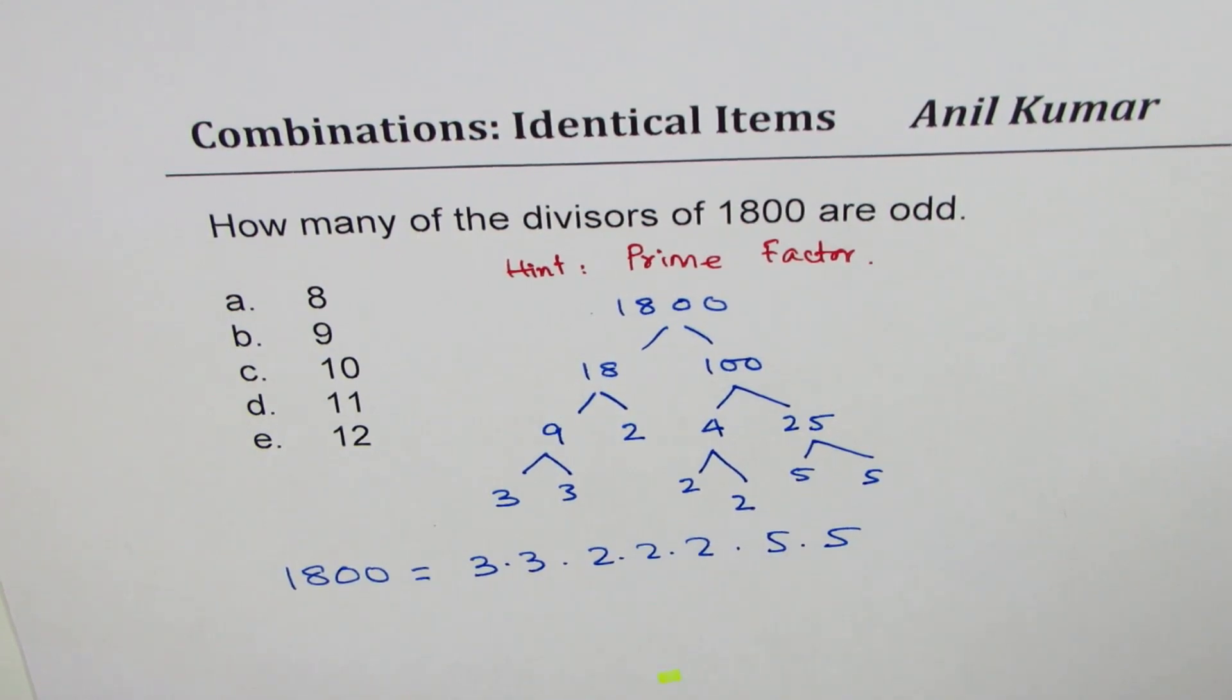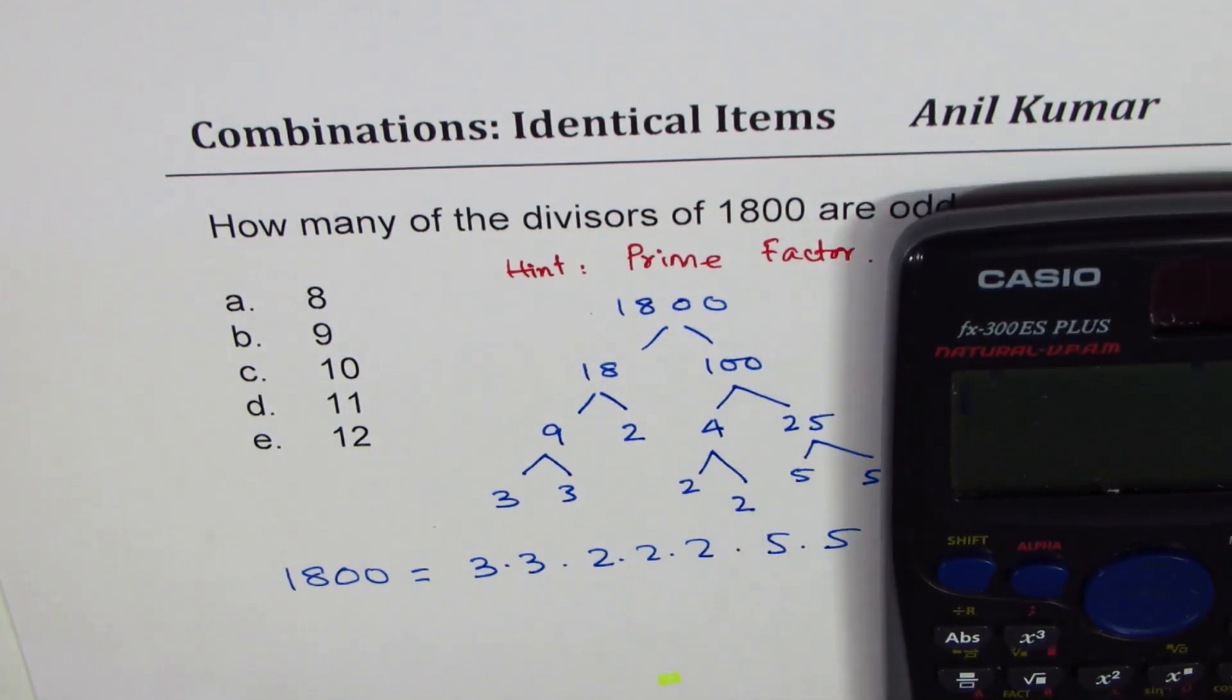These are all the factors. If you multiply these numbers, let's do it - it's a good check. 3 times 3 times 2 times 2 times 2 times 5 times 5 equals 1800. Correct!